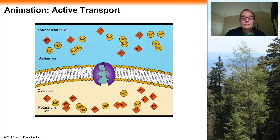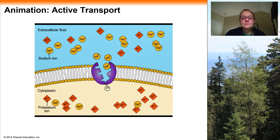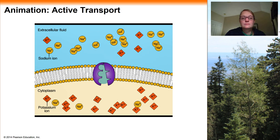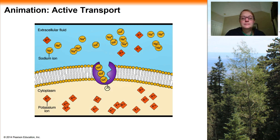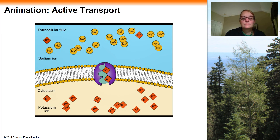Sometimes a cell needs to move a solute against its concentration gradient. This process is called active transport and it requires input of energy from ATP. For instance, most animal cells need to expel sodium ions, Na+, and take in potassium ions, K+, both against their concentration gradients. Here is how the sodium potassium pump works: sodium ions bind to a transport protein. ATP transfers a phosphate group to the protein, providing the energy that causes the protein to change shape and push the sodium ions across the membrane, where they are released outside the cell. Potassium ions then bind to the transport protein, the phosphate group is released, the protein returns to its original shape, and the potassium ions are released inside the cell.